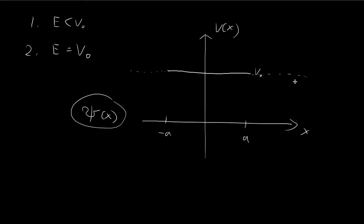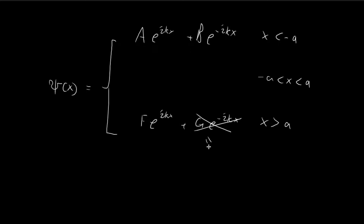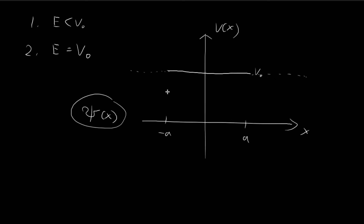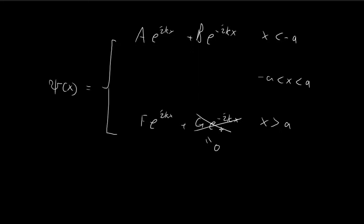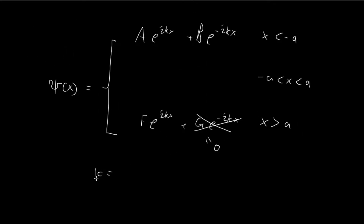For the two outer regions — when x is smaller than negative a and when x is larger than positive a — we get the exact same expressions as before. The component travelling in from positive infinity is zero, since the particle comes in from the left and either bounces back or passes through. k is equal to the square root of 2mE divided by ℏ.